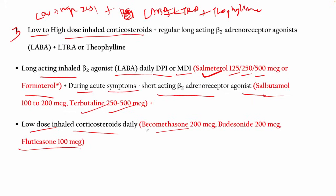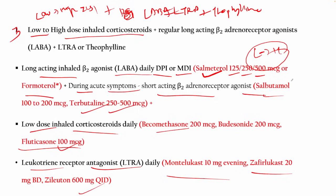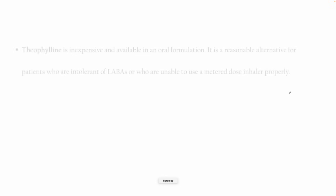Inhaled corticosteroids options at this step include fluticasone as a newer agent, and leukotriene receptor antagonists such as montelukast in the evening, zafirlukast twice daily, and zileuton. So this step covers low to high dose ICS in the treatment plan.